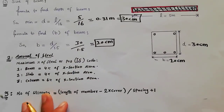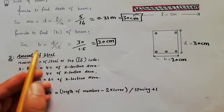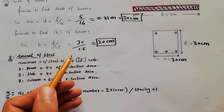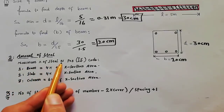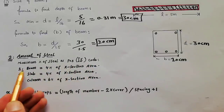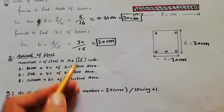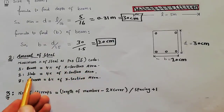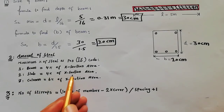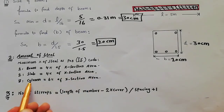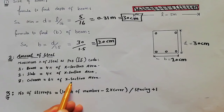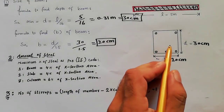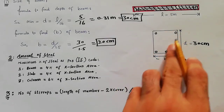The second tip covers the amount of steel for different structures. As per IS code, the maximum percentage of steel is: 4% of cross-sectional area for beams, 4% of cross-sectional area for slabs, and 6% of cross-sectional area for columns.